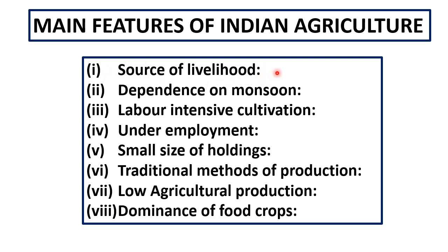Second, Indian agriculture is mainly dependent on monsoon. Its dependency on monsoon is one of the important features. Most of the farmers depend on monsoon to cultivate crops — if monsoon fails, crop fails; if monsoon is good, then farmers produce a good amount of crop.